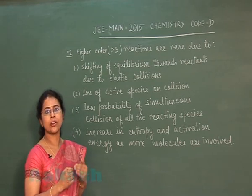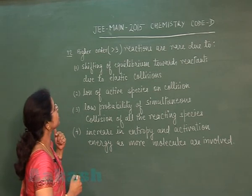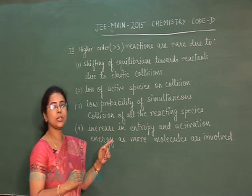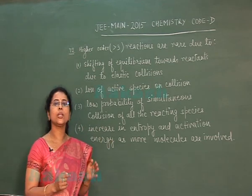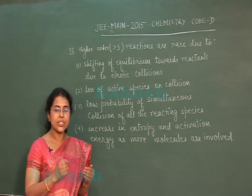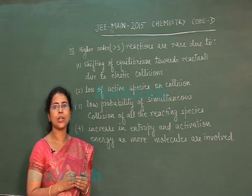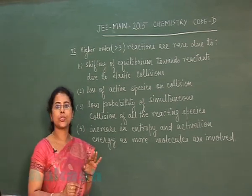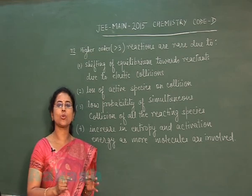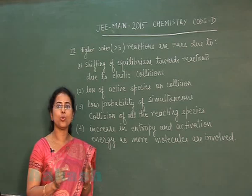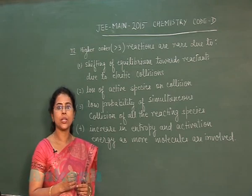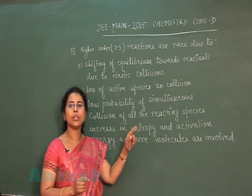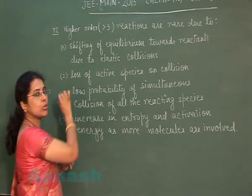Looking at the options: the first option — shifting of equilibrium towards reactants due to elastic collision — this statement is incorrect. Molecular collision is always an elastic collision; this alone does not make order greater than 3. The second option — loss of active species on collision — is also incorrect, because there is no loss of active species during collision.